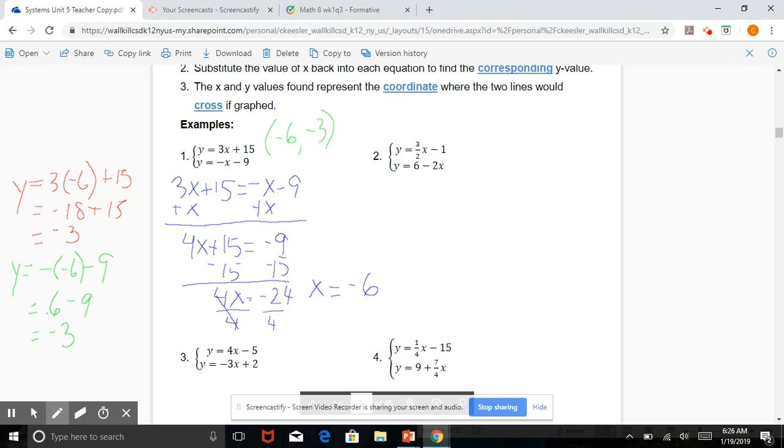So there's a lot of work involved in here, but it's important to do all of it to double check to make sure you've done it correctly. Number 2, we do the same process. Again, drop the y's, so 3 halves x minus 1 equals 6 minus 2x.